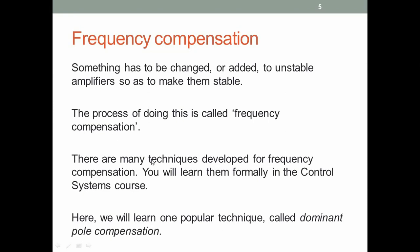There are many — probably three dozen — techniques that you will find in the literature on how to compensate an amplifier. There are different circuit techniques; you will learn some of them formally in the control systems course. Here, we will learn one technique which is very popular in amplifier design and a large number of commercial op-amps use it. It is called dominant pole compensation.